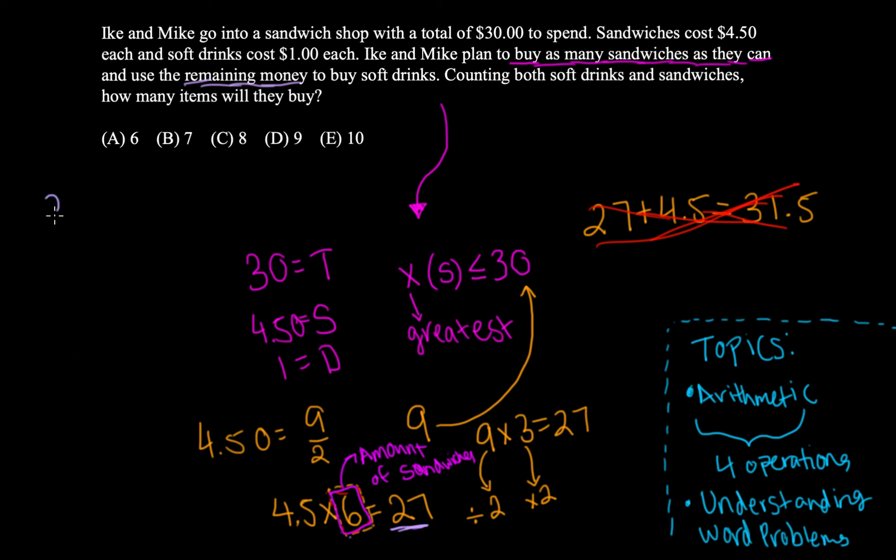So find the amount they have left and see how many soft drinks you can buy with that. The way we can do that is go ahead and say 30, their total money, minus the money they spent on sandwiches, is equal to 3. So 3 must be their remaining money.